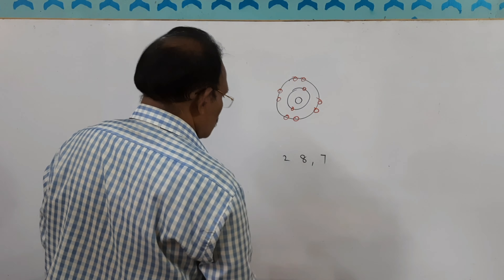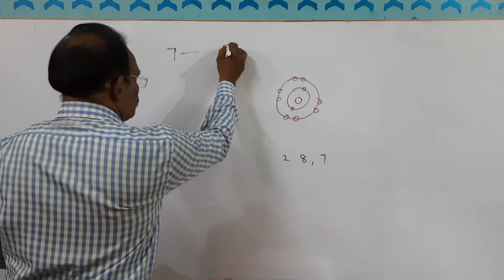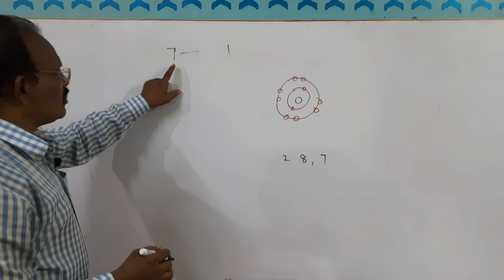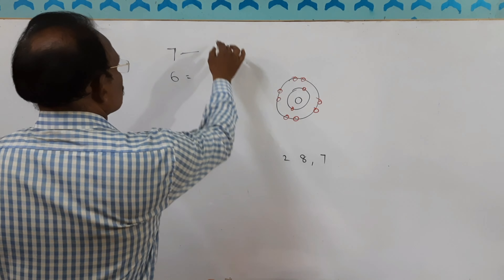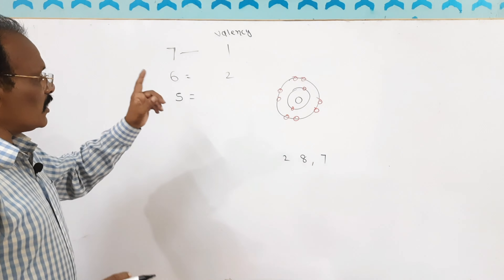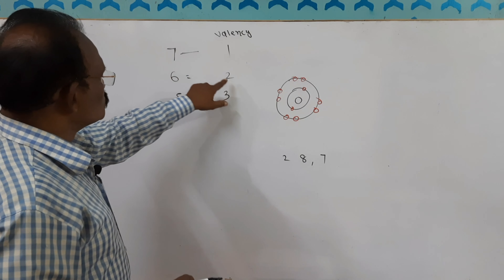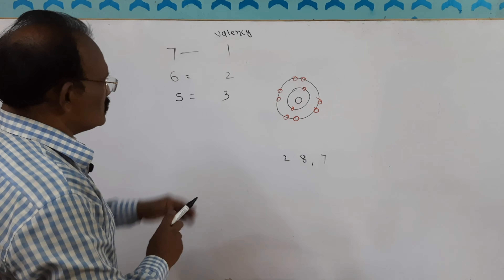Now, valency: sodium has 1 electron in the outermost orbit and chlorine has 7 electrons. Chlorine requires 1 more to complete the octet — so its valency is 1. Those who have 7 electrons in the outermost shell have valency 1. Those who have 6 electrons require 2 more, so valency is 2. Those who have 5 electrons require 3 more, so valency is 3. And 7+1=8, 6+2=8, 5+3=8 — all complete the octet.